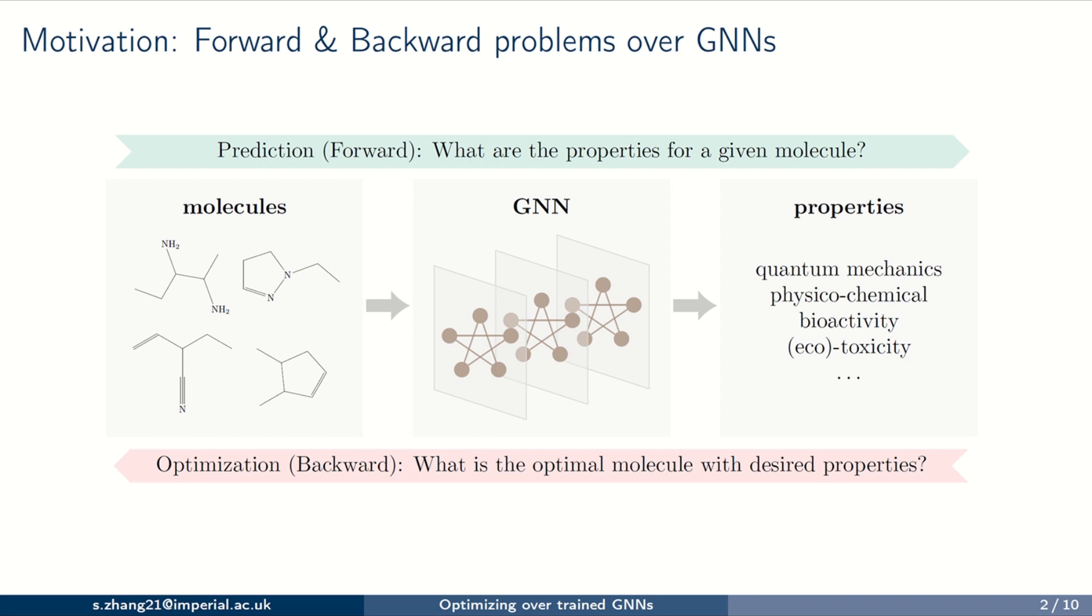First of all, our motivation comes from the inverse problems defined over-trained GNNs. As we know, GNN is a powerful machine learning model working on graph domain. Our question is, with the trained GNN, which input has the optimal output?